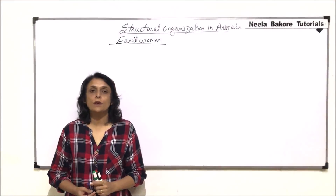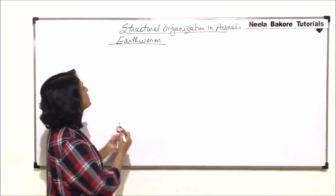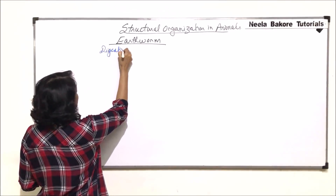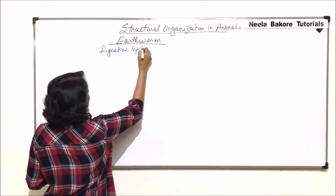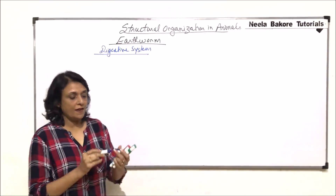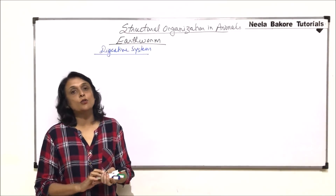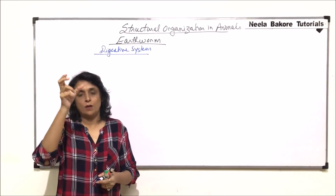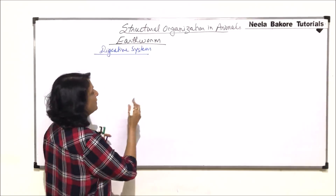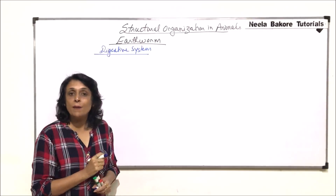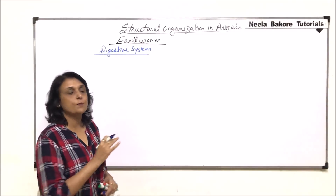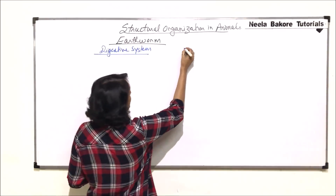In this video, we'll be talking about the digestive system of earthworm. Earthworms have a very well developed alimentary canal and it is a tubular canal, meaning all complete structures are in the form of a tube. We have to remember in which segments each structure is present, and then we'll talk about the functions.